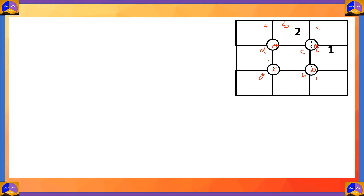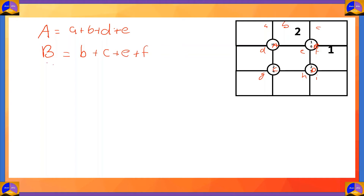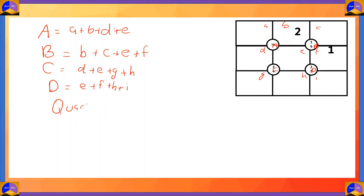Quadrant A is equal to cells a plus b plus d plus e. Capital A equals small a plus small b plus small d plus small e. Quadrant B is equal to cell b, cell c, cell e and cell f. Quadrant C is equal to cell d plus cell e plus cell g plus cell h. And quadrant D is equal to cell e plus f plus h plus i.